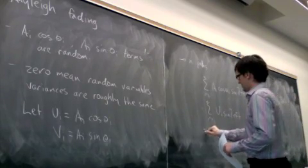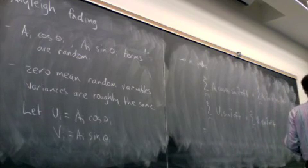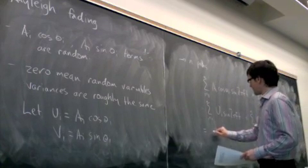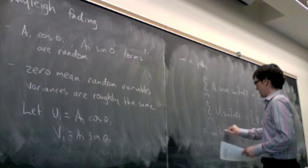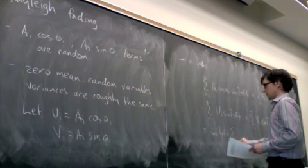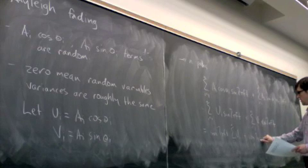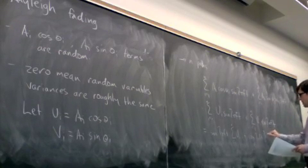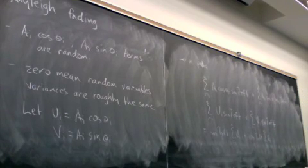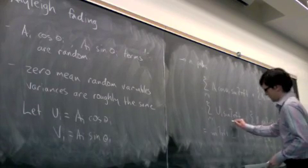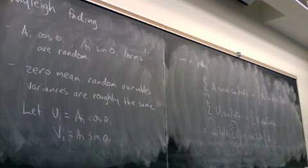Sine and cosine are now not functions of i, because in both cases the signal getting through is the same — it's just scaled and phase shifted. So we have: sine 2 pi f t times the sum from i equals one to n of u_i, plus cosine 2 pi f t times the sum from i equals one to n of v_i.